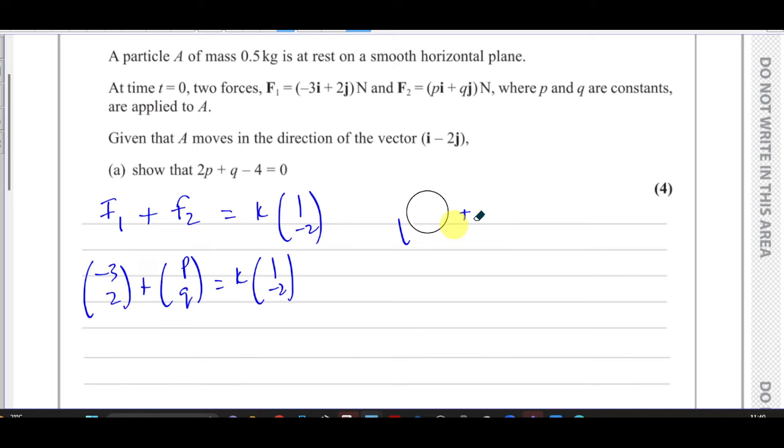From that we can set up a pair of equations, one from the i components. If we look at the i components, I have minus 3 plus p equals k, and if we look at the j components, we're going to have 2 plus q equals minus 2k.